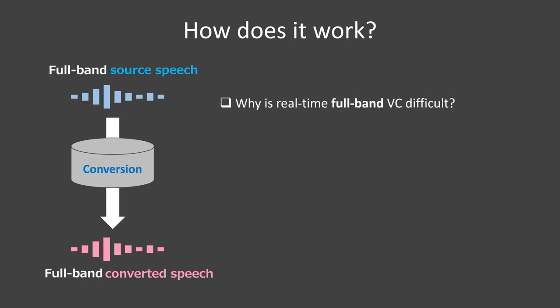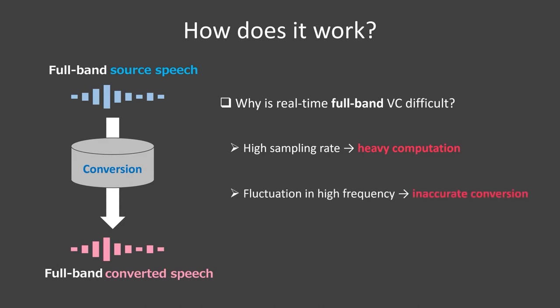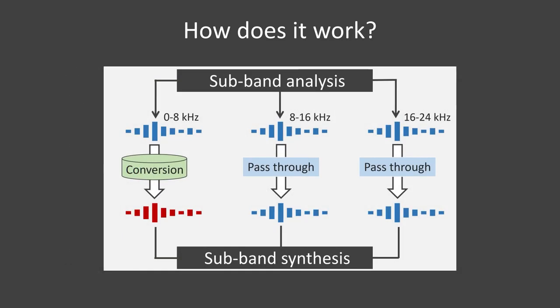First, the computational cost is heavy due to increased sampling points. Second, converted speech quality degrades due to fluctuations on the high-frequency band. To solve these problems, we introduce sub-band multi-rate signal processing that improves converted speech quality and reduces computational cost.